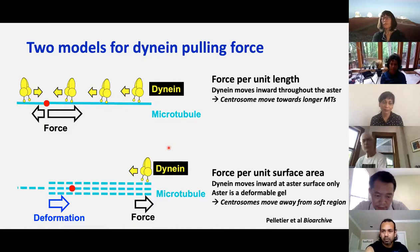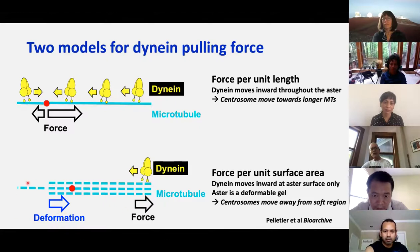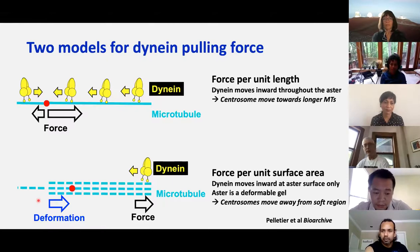On the basis of James' work, we're going to propose a different model. The key element is a force per unit surface area — dynein is only active on the very outside of the aster, not active internally. That creates a force on the outside, and then we think the directionality comes from a deformation, because the inside is softer. So this force is transmitted through the aster and the deformation is controlled by where the system is soft — a very different way of thinking about it.